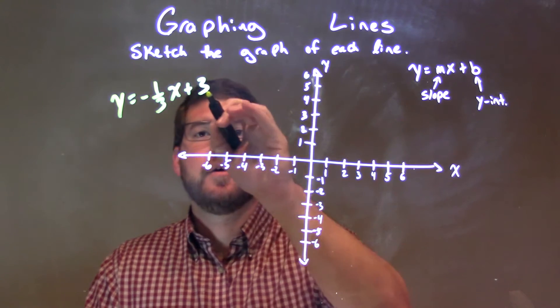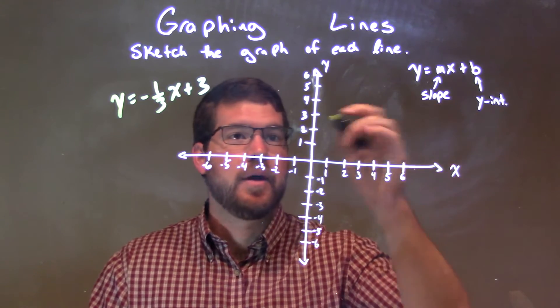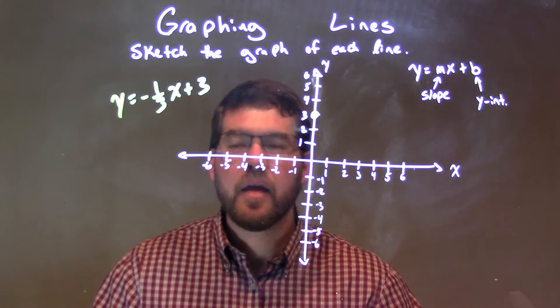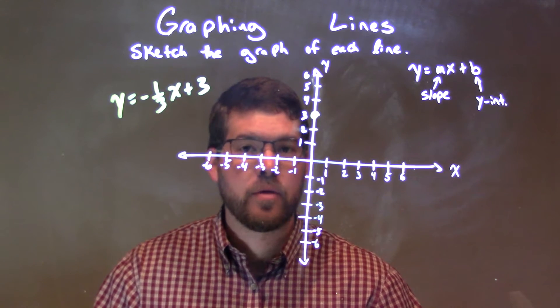Well, first thing I'm looking at here is my y-intercept, which is three, right? So we have positive three, our b-value, got a y-intercept. Then they tell us we have a slope of negative one-third.